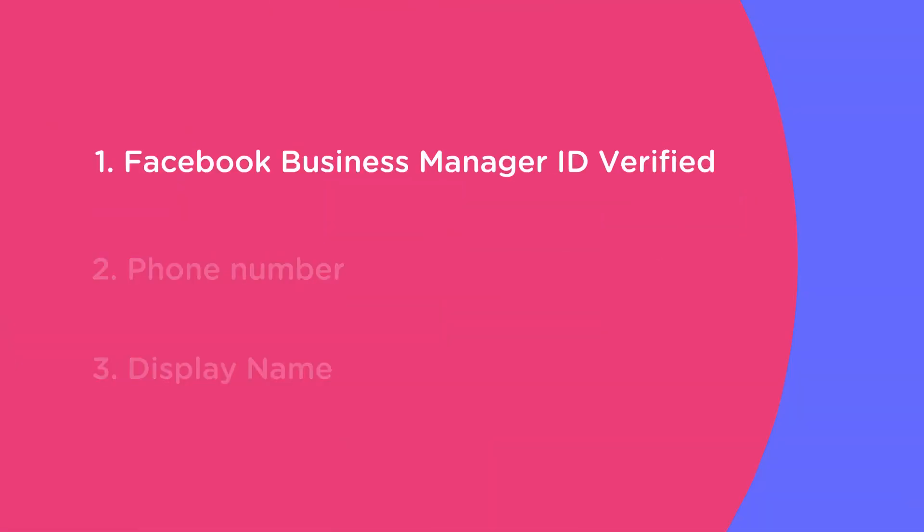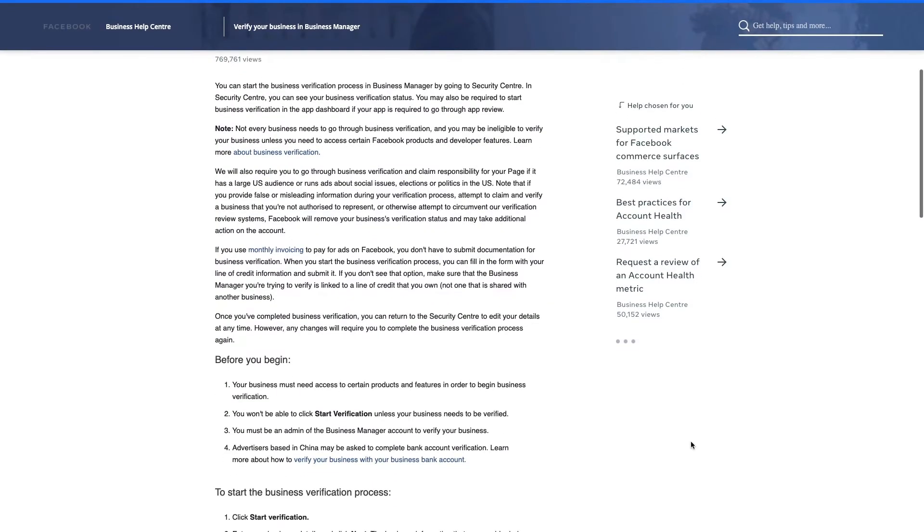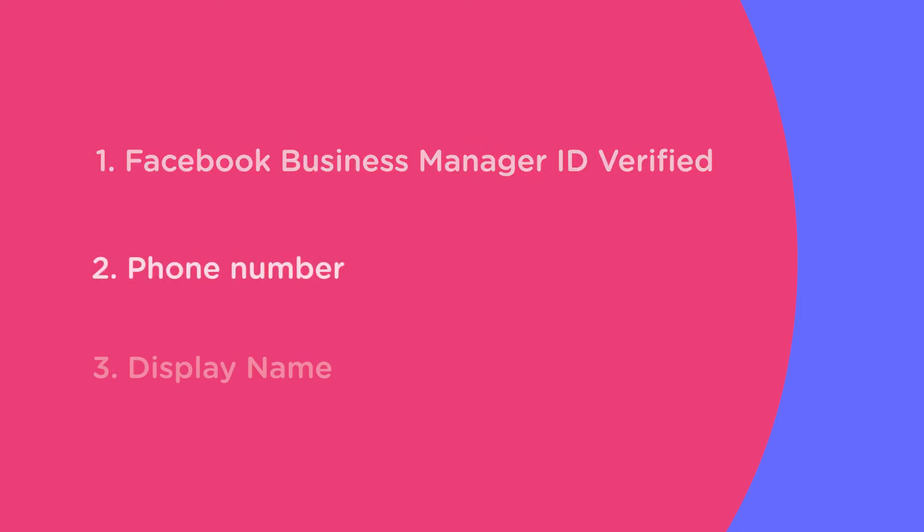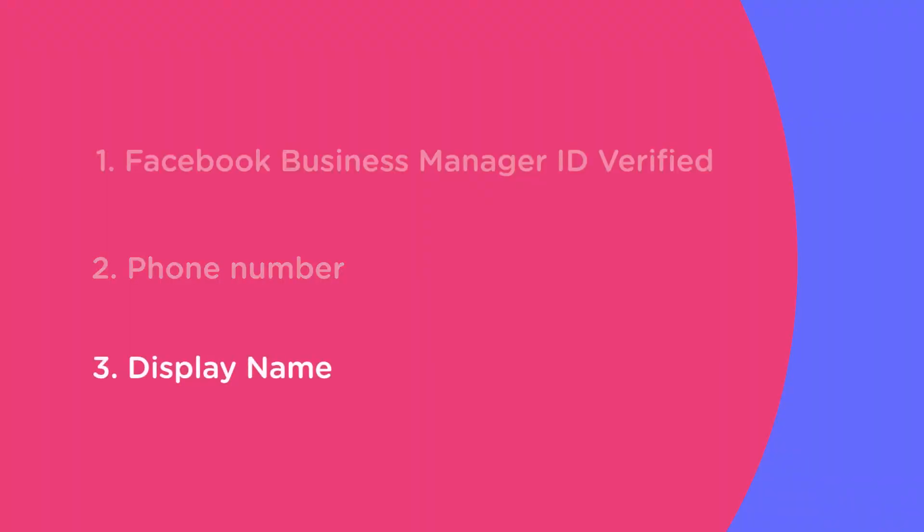So, what do we need from you in order to start? Three things. First of all, your Facebook Business Manager ID verified. If you don't know how to get it, I will leave some links below in the description on how to do so. It's a very simple step-by-step process managed by Facebook 100%, and we don't have any influence at all. Secondly, we'll need a phone number to be integrated as the official WhatsApp Business API. Keep in mind that once it's integrated, that number won't be able to be used in a regular WhatsApp mobile app. And finally, we'll need a display name for the WhatsApp account. This name should match exactly the Facebook Business Manager ID account. Otherwise, the process may take longer, or we could even get rejected by WhatsApp.